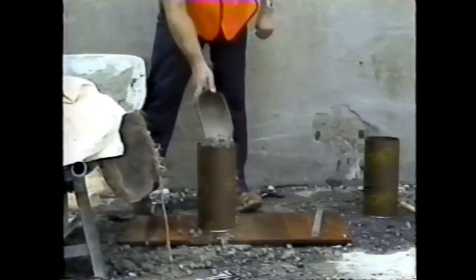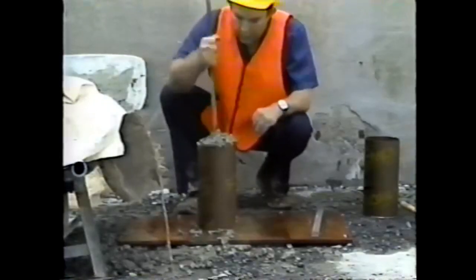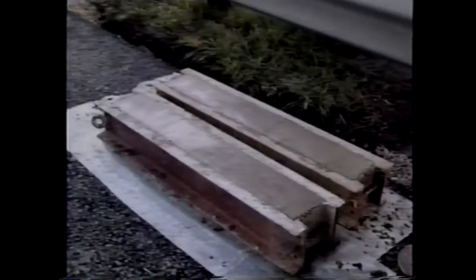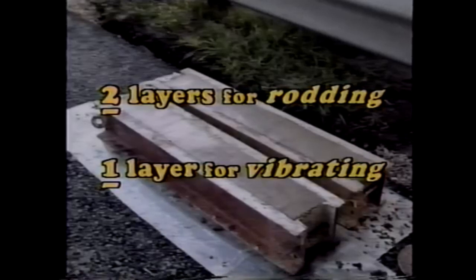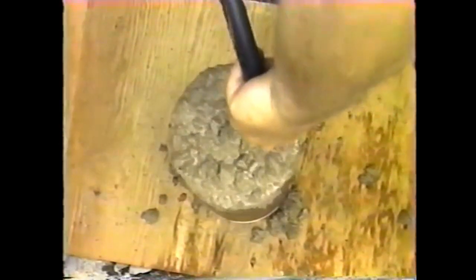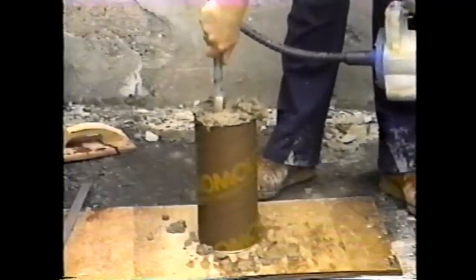For common molds such as cylinders with depths up to 12 inches, the concrete is placed in three equal layers for rodding and two equal layers for vibrating. For beams with depths between 6 and 8 inches, the concrete is placed in two equal layers for rodding and just one layer for vibrating. Selection of the consolidation procedure depends on the slump: less than one inch, vibrate; more than three inches, rod; in between, optional.